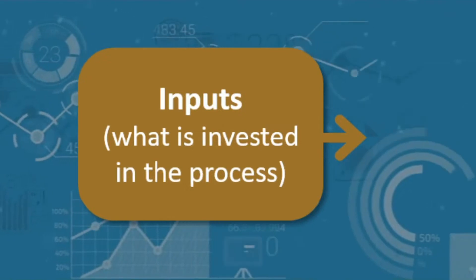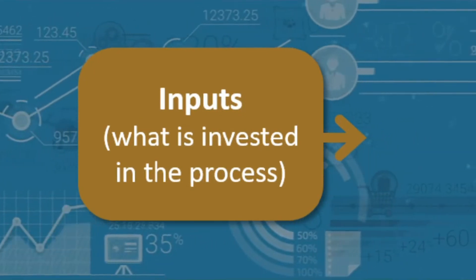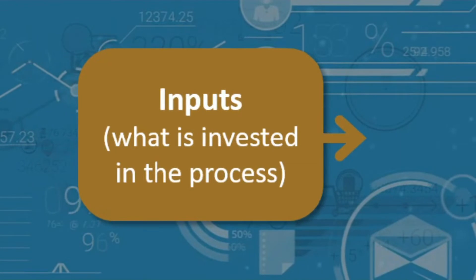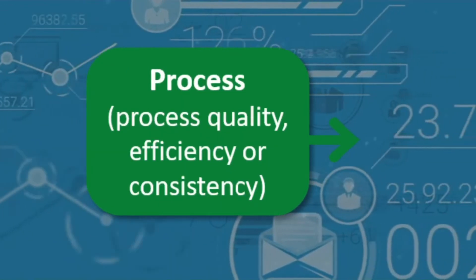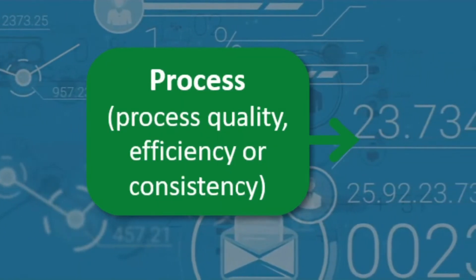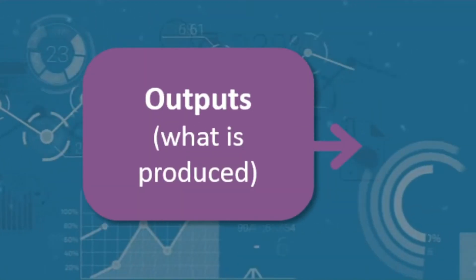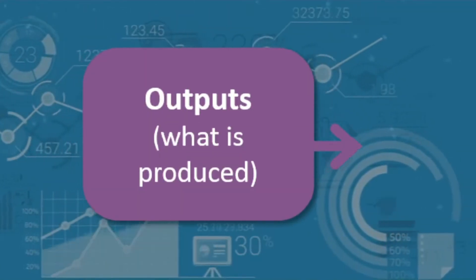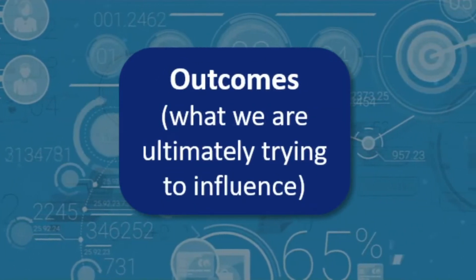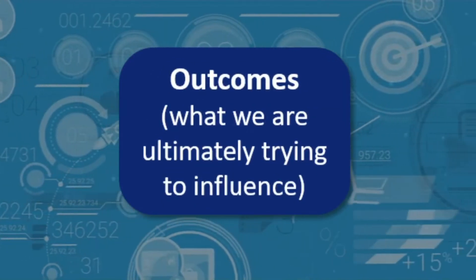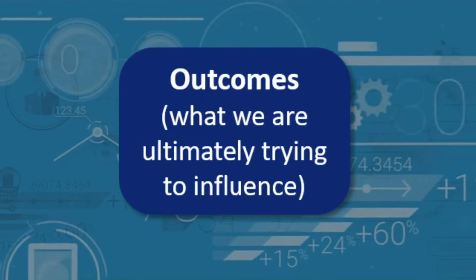For every key process, we spend resources like time, money, raw materials, and other inputs. Then every process has measures that could be tied to that particular process. The outputs of my process are what we produce. Ultimately, though, I want to create an impact with my work. Outcomes capture that impact.